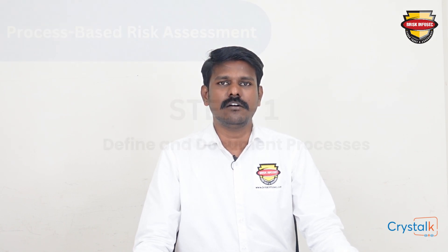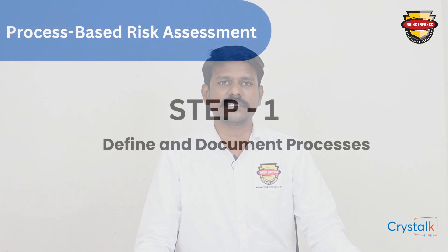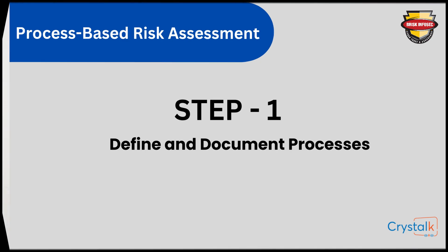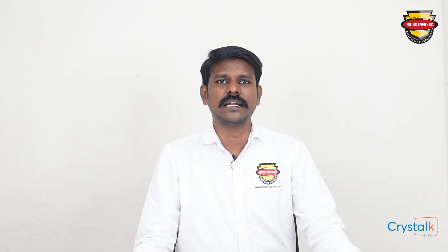Here are the steps to perform process-based risk assessment. The first step is to define and document processes — identify and document all the key processes and activities within your organization. These processes can include production, supply chain, customer service, financial management, and so on.